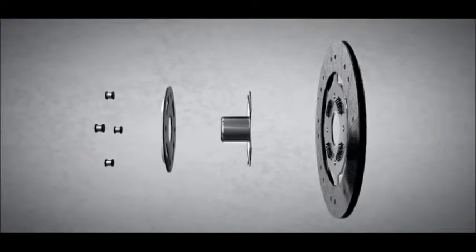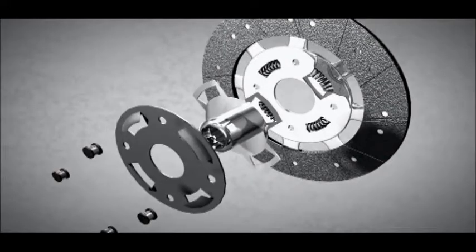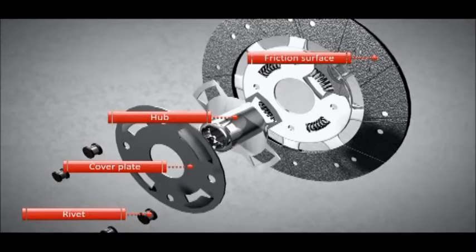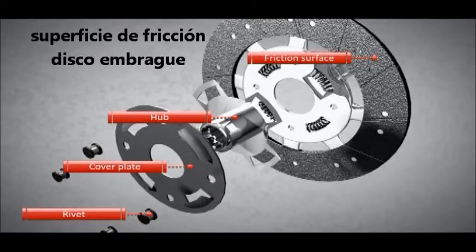The clutch disc is made of several components, the most important being the hub, which is riveted to the disc with a cover plate, and the friction material installed on both sides.